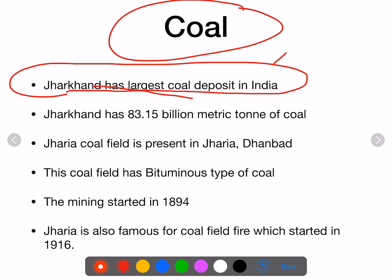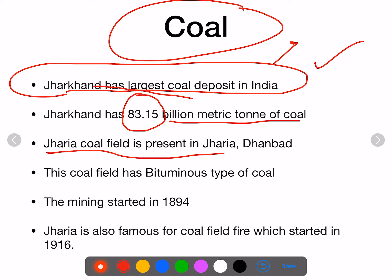This is important — in an examination, if they ask which state has the largest coal deposit, the answer will be Jharkhand. You should also know how much coal is available: 83.15 billion metric tons. Coal is present in Jharia, which is in Dhanbad, and has a very high amount of coal.